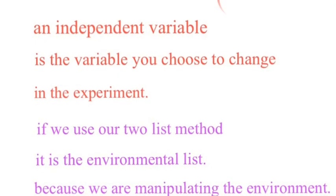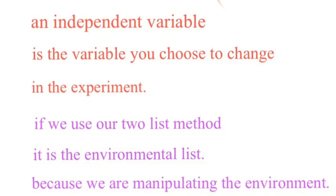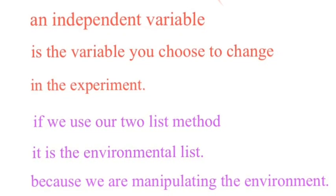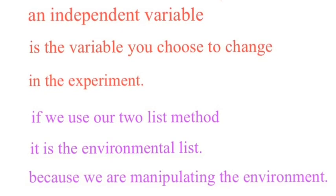So the first one is an independent variable. Now, an independent variable is the one you choose to change in the experiment. So if we use our method that we used in the last video where we had two lists,